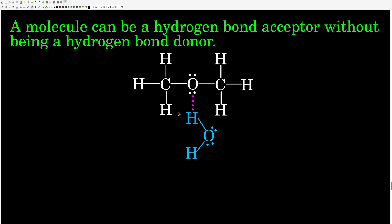A molecule can be a hydrogen bond acceptor without being a hydrogen bond donor. For example, dimethyl ether does not have a hydrogen directly attached to its oxygen. But if you mix in another molecule like water, the hydrogen on the water molecule can interact with the oxygen on the dimethyl ether in the same way it would with an oxygen on another water molecule, creating a hydrogen bond between the dimethyl ether and the water.